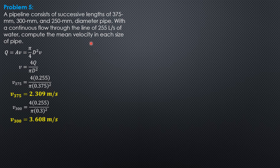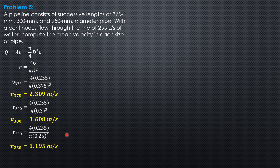And for the 250 mm diameter pipe, velocity is 4 times 0.255 over pi times 0.25 squared, which gives 5.195 meters per second.